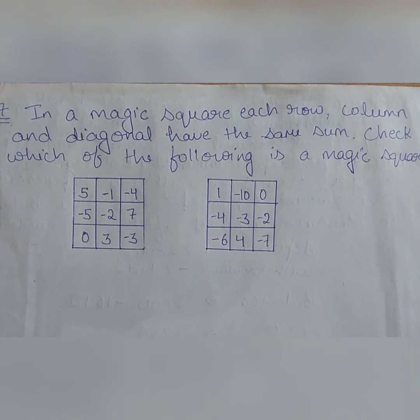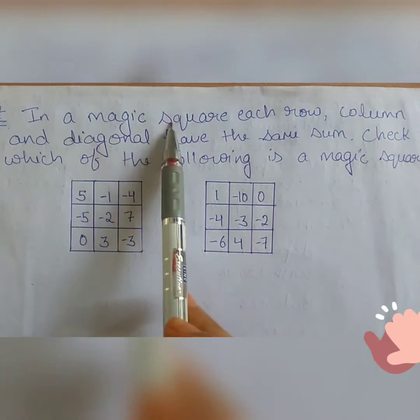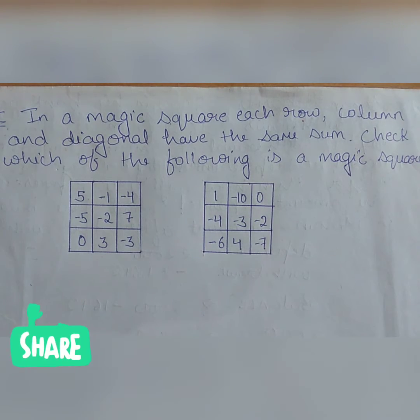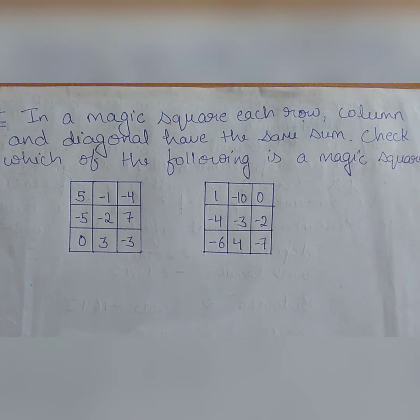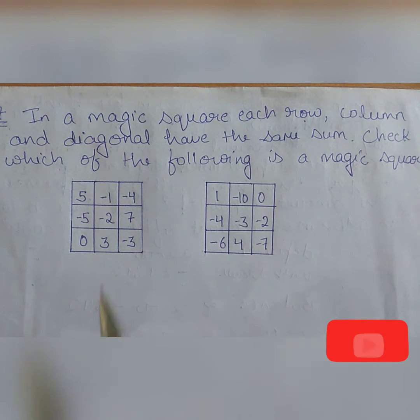It is something magical. It is about a magic square. In a magic square, each row, each column and diagonal have the same sum and we are given here two magic boxes, magic squares. We have to check whether they are magic squares or not. Let's check it, it would be interesting.